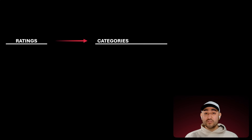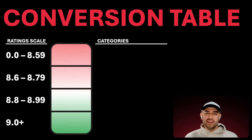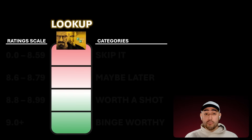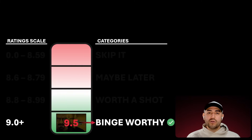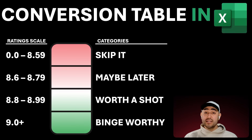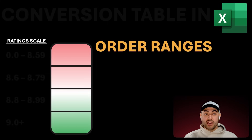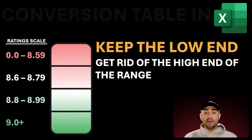Now, to categorize ratings, we're going to need a conversion table. First, we need a rating scale, like this one that I just totally made up. These numbers represent the ranges that correspond to our four categories. That way, we can look up a show's rating — like Breaking Bad's 9.5 — on our scale, and based on the range it lands in, we'll assign it a category like Binge-Worthy. There are just two key things you need to get right when building your scale: order the ranges so the lowest values are at the top down to the highest at the bottom, and keep the low end of each range and toss out the high ends. We won't need them.